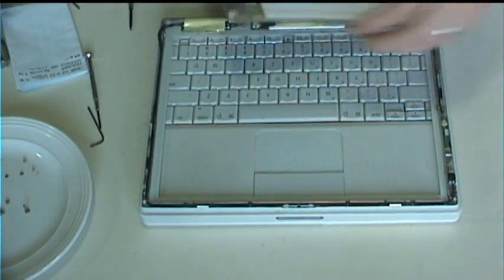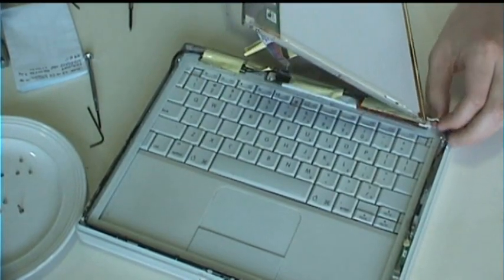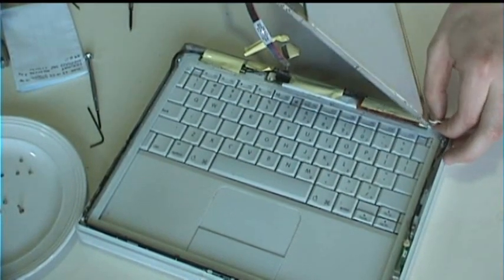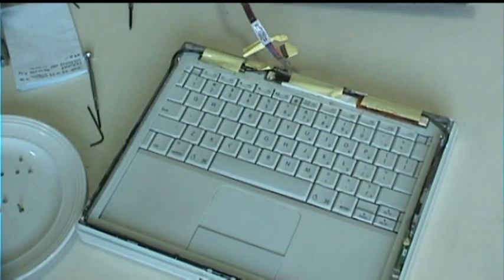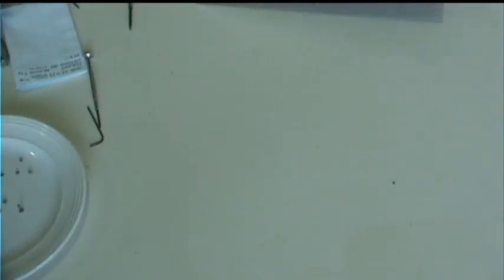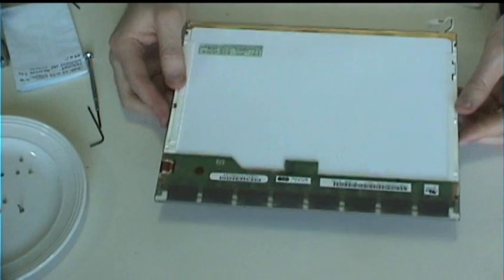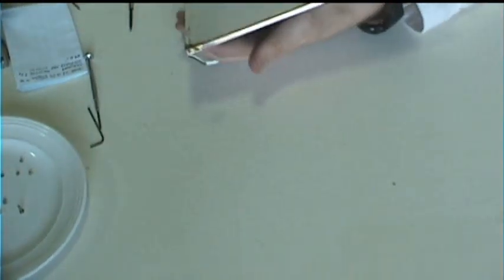And after that's done you can basically lift out the entire screen and detach it from the rest of the computer. There's also down here in the corner, this is the power that goes to the backlight from the backlight inverter. So you want to pop that little clip out. And then there you go, you have your screen separated from the computer. You can just set the computer aside. You won't be working with that until you put everything back together.